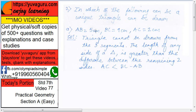AB equals 5, BC equals 9, AC equals 2. Now can a unique triangle be drawn from this? Go back to the properties of triangle as discussed in question number 1. Triangle cannot be drawn from these three segments. Why? Length of any side of a triangle is greater than the difference between the remaining two sides.